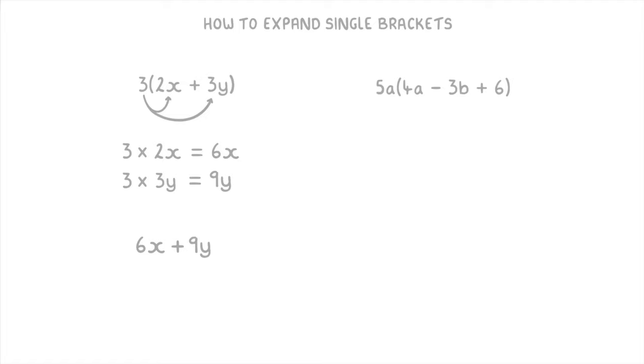For this next one, because the 5a is the term on the outside of the brackets, this time we need to multiply the 5a by all three of these terms inside the bracket. And I recommend using these little arrows like this to indicate which ones you need to multiply. So you'd have to do 5a times 4a, which is 20a squared.